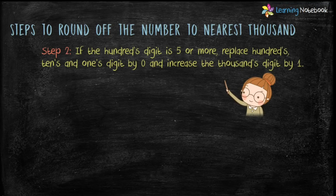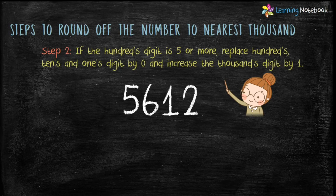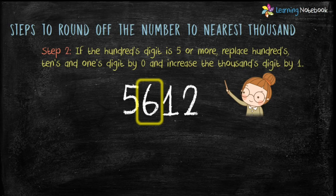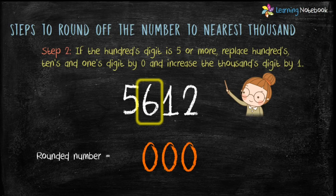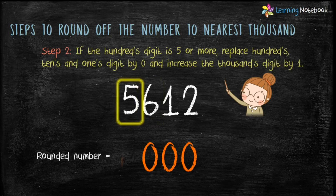Step 2: if the hundreds digit is 5 or more, replace the hundreds, tens, and ones digits by 0 and increase the thousands digit by 1. For example, 5612 — here the hundreds digit is 6, which is greater than 5. So first replace 6, 1, and 2 by 0, then increase the thousands digit, which is 5, by 1 — 5 plus 1 equals 6. The rounded number is 6000.